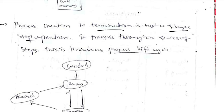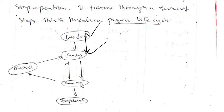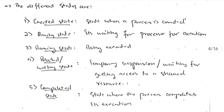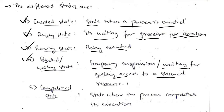Process creation and termination is not a single-step operation — processes pass through multiple stages known as the process life cycle. Created state: entered when the process is created. Ready state: waiting for the processor to execute. Running state: currently being executed. Blocked/waiting state: temporary suspension while waiting for I/O or access to a shared resource. Completed state: when the process completes its execution.